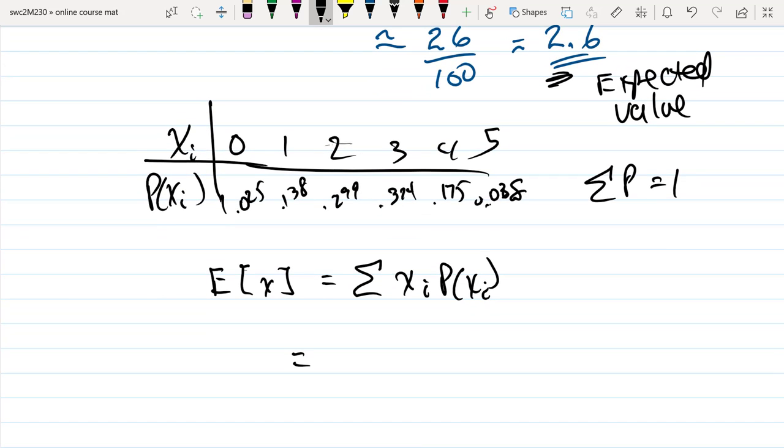And in long form it would look something like this: it's zero times 0.025 plus one times 0.138 plus two times 0.299, and so forth.